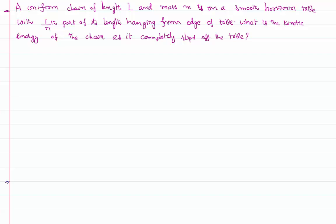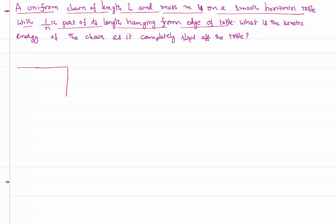Welcome to this video lesson. We are solving a problem from work, power and energy. There is a uniform chain of length L and mass M on a smooth horizontal table, with one by nth of its length hanging from the edge of the table. So what is hanging is L by N, and the remaining part of the chain is on the table itself.